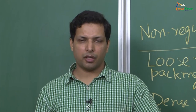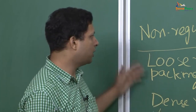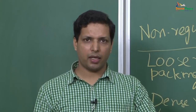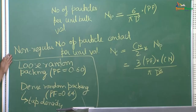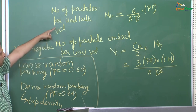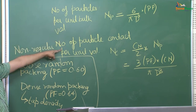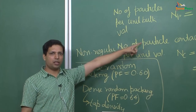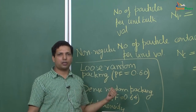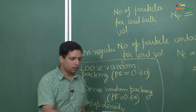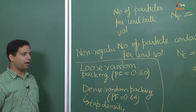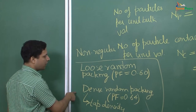In the previous lecture we looked at some regular packing and also saw that there are some non-regular packing. Regular packing are not something that you would actually expect in a real material; what you would expect is a non-regular arrangement. For that we also saw that we can get relations for number of particles per unit bulk volume and number of particle contacts per unit volume. These were obtained directly from regular structure but can also be extended to non-regular structure. We looked at loose random packing and dense random packing.